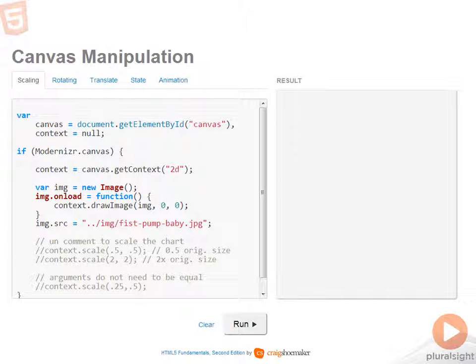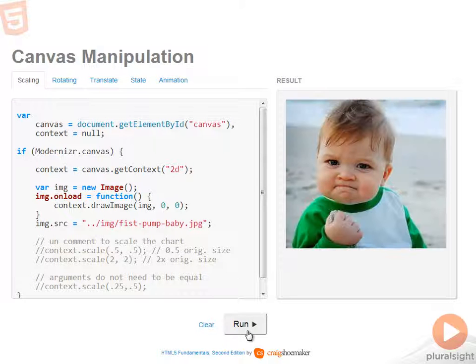So far you've seen how you can draw directly on the canvas, but there's a number of different ways that you can manipulate the canvas as a whole. So let's run this code and see what we start off with.